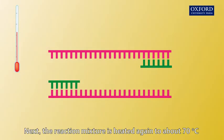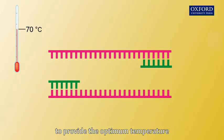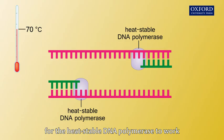Next, the reaction mixture is heated again to about 70 degrees Celsius to provide the optimum temperature for the heat-stable DNA polymerase to work.